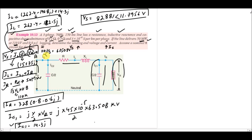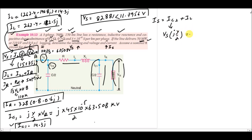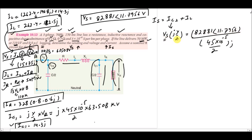To calculate the sending end current IS — the second part of the question — IS = IC2 + IL, where IC2 = VS × j(Y/2). Using VS = 82,810 ∠11.7956° V and j(Y/2) = j(45×10⁻⁵ / 2), we compute IC2.